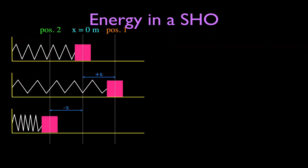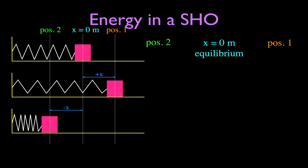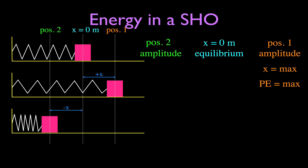We have three different diagrams for our simple harmonic oscillator — a mass attached to a spring oscillating back and forth between position one and position two, passing through the equilibrium position each time. At the equilibrium position, displacement is zero. At position one, the spring has its greatest extension, X is at its maximum, and therefore the potential energy is at its maximum. When it reaches maximum extension at the amplitude, the mass is not moving, so kinetic energy is zero. At this location we have maximum potential energy and no kinetic energy, and the acceleration is at its maximum.